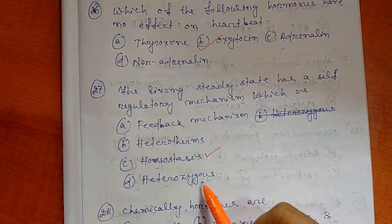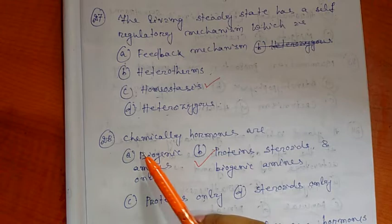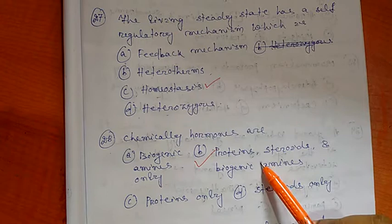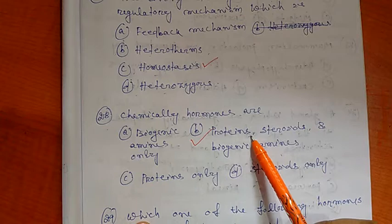Question 28: Chemically, hormones are. Options are A) Biogenic amines only, B) Proteins, steroids, and biogenic amines, C) Proteins only, D) Steroids only. So the right option is B: proteins, steroids, and biogenic amines.